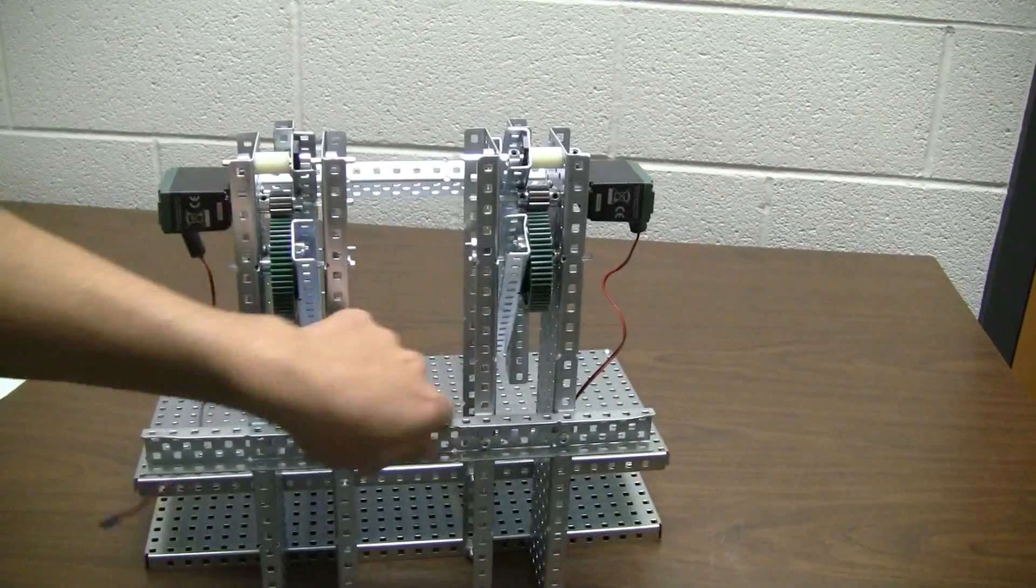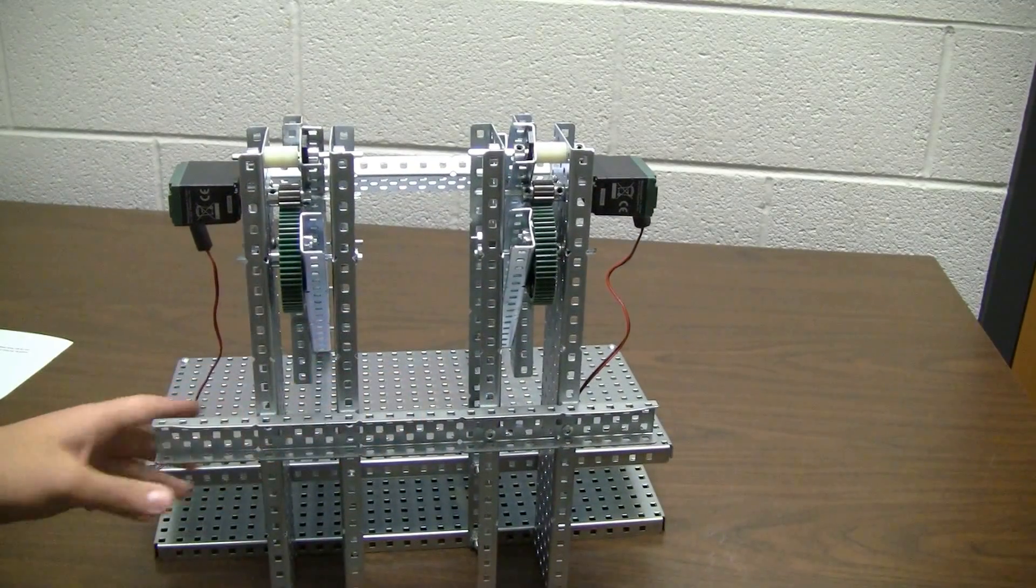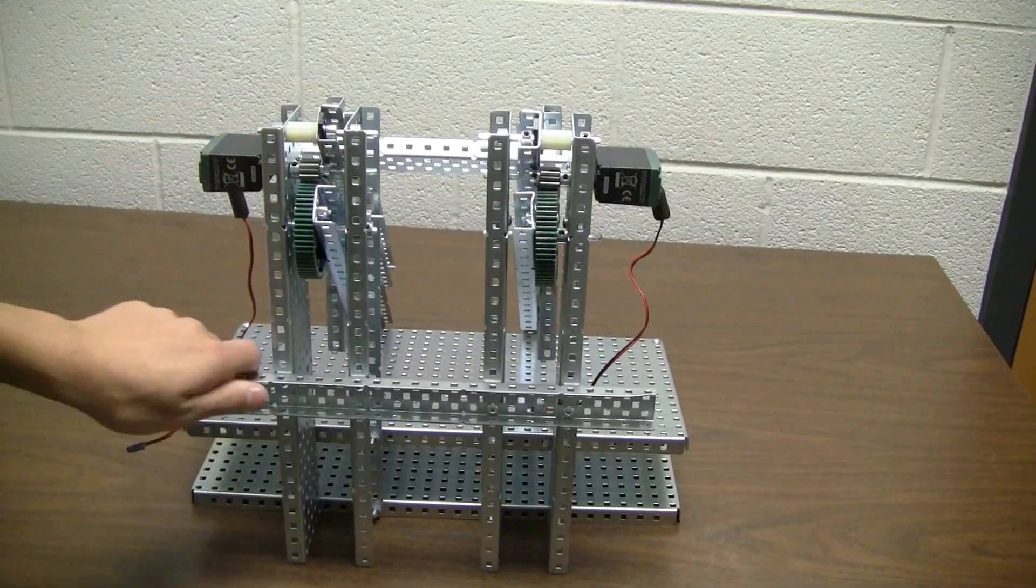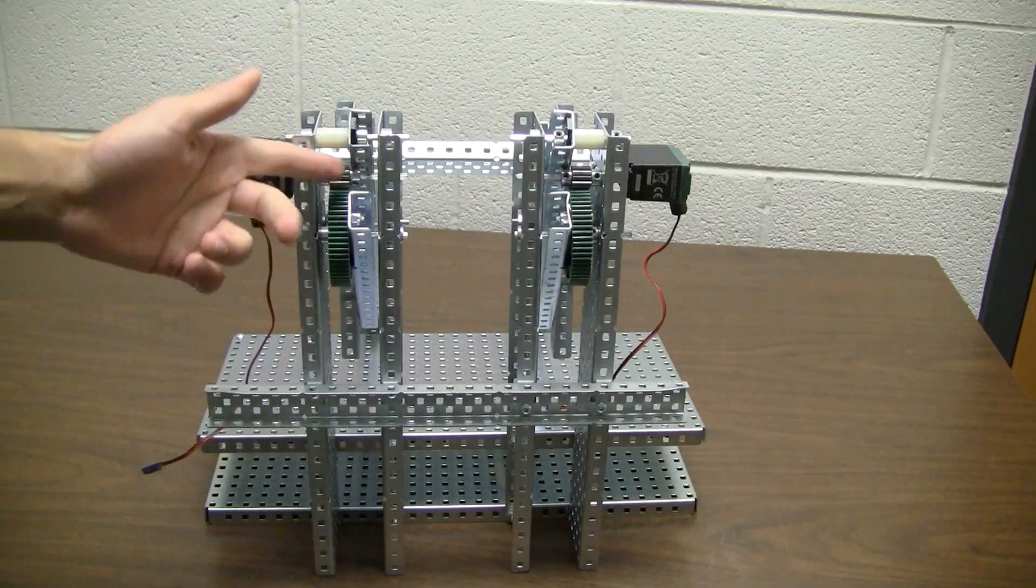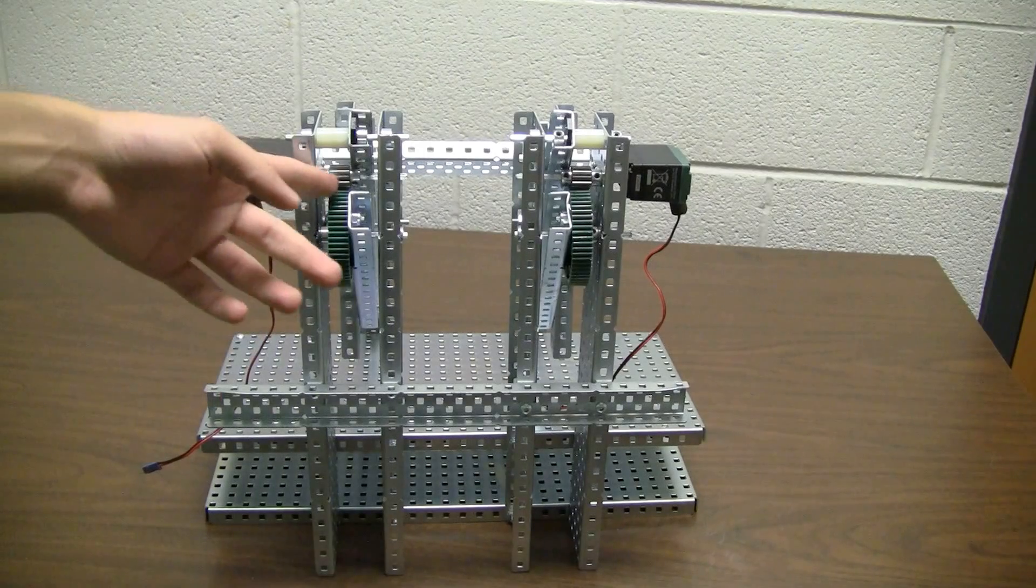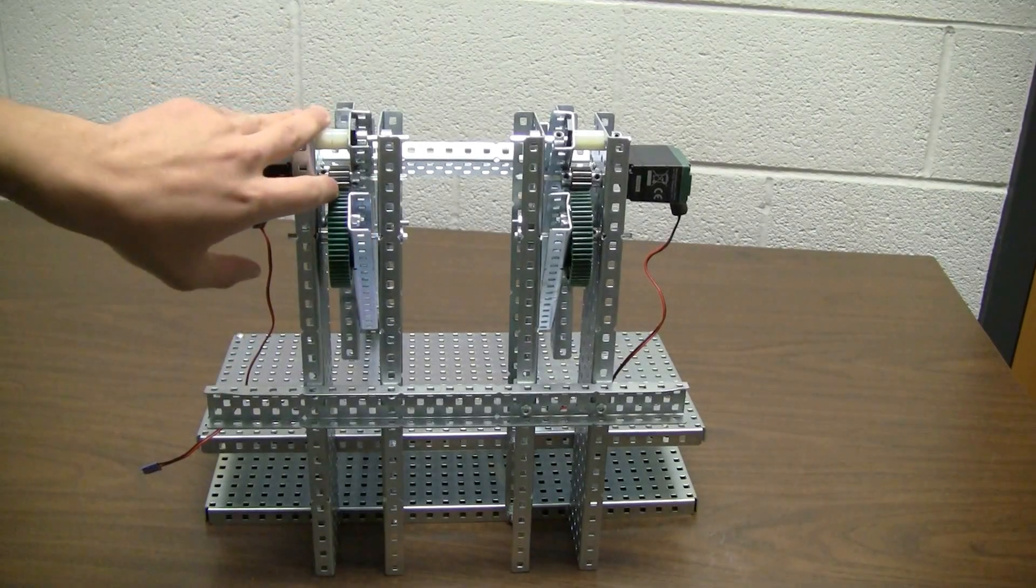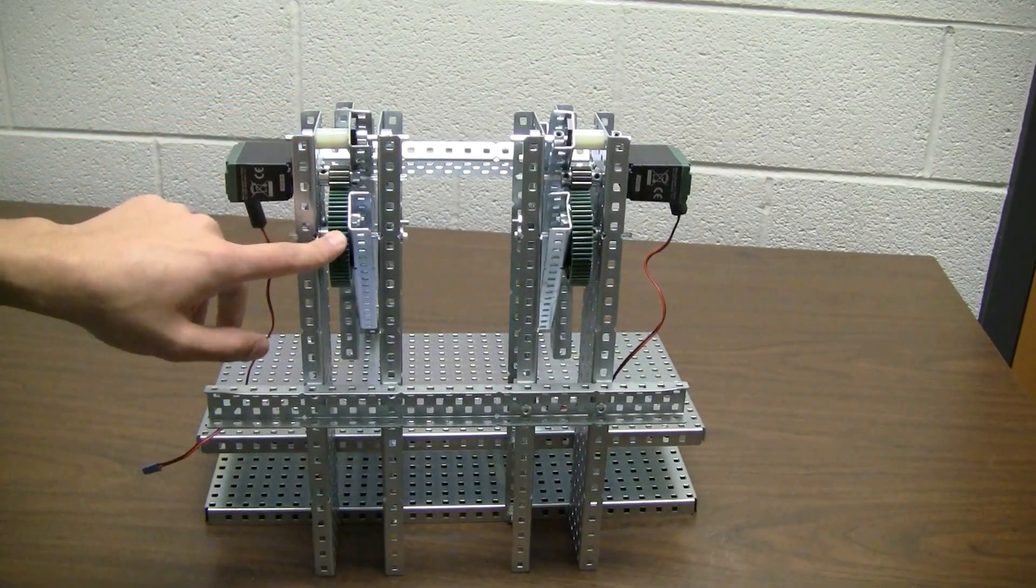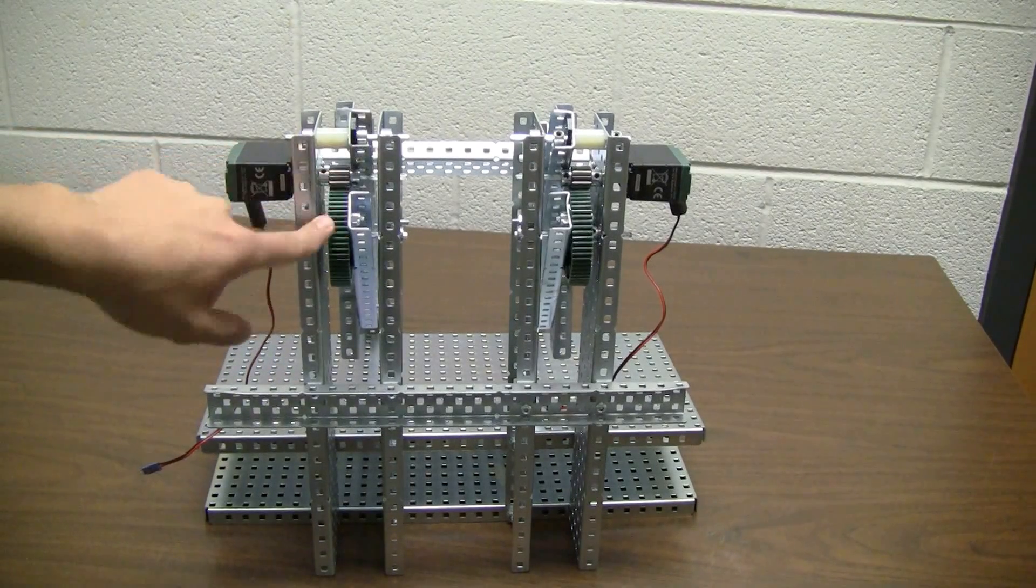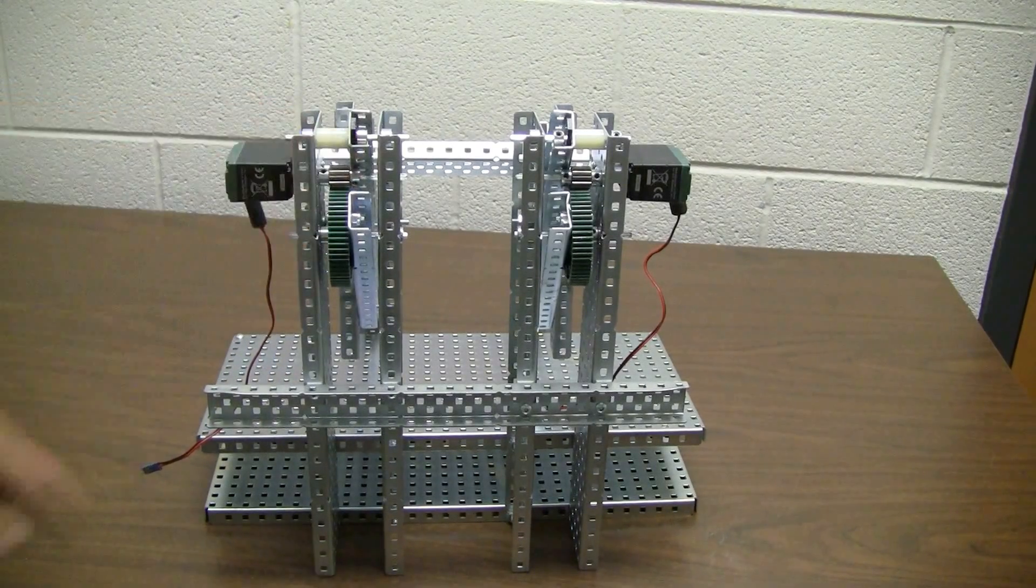It is a 12 tooth metal gear and a 60 tooth plastic gear. It is a 5 to 1 ratio because for every 5 times this metal gear turns, this blue one, this green gear turns one time. So this is driving, this is a driven 5 to 1 ratio.